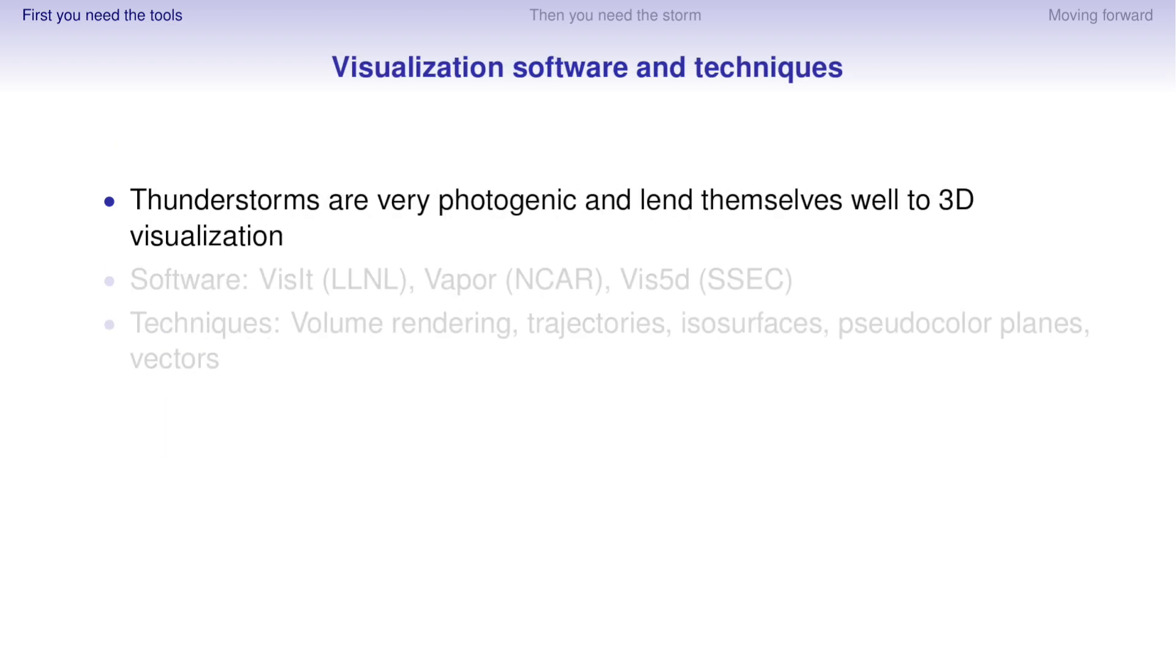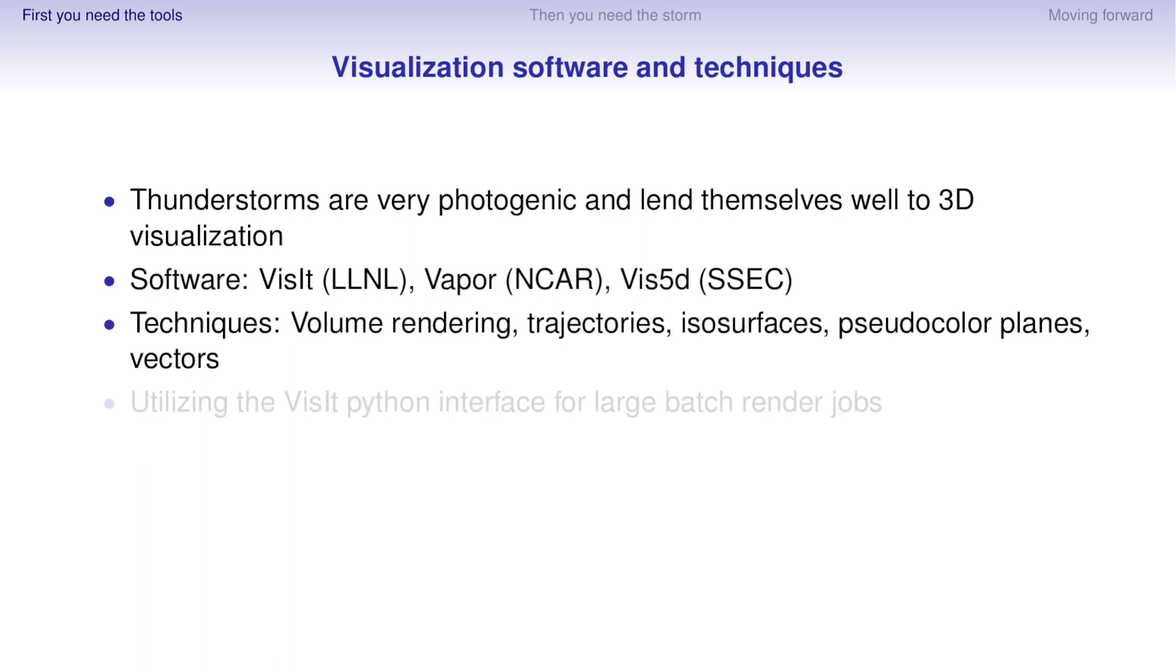What kind of techniques do we use? Well, thunderstorms are very photogenic. What I mean by that is they have a nice height-to-width aspect ratio that sort of begs three-dimensional volume rendering and things like that. So I'm using VisIt, Vapor, and to a smaller extent, Vis5D.